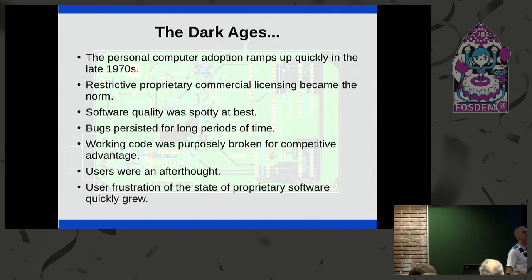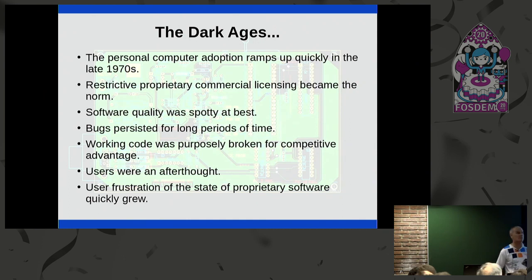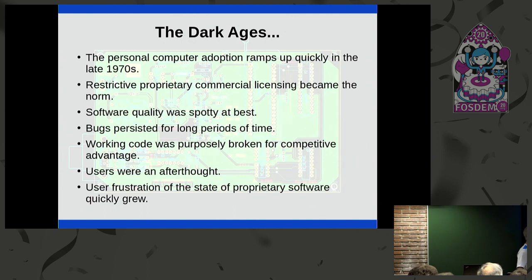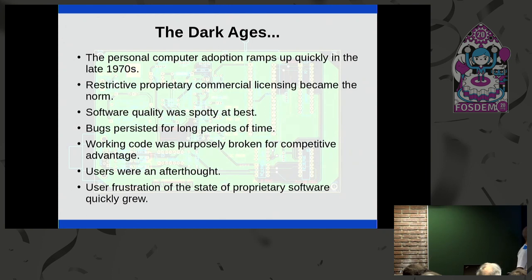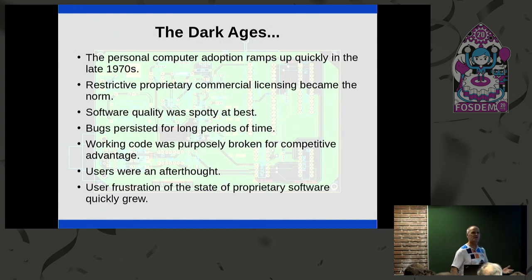They were restrictive proprietary licenses. We've all seen those before — they've been around for decades. Even commercial software quality was not what it is today. Software distribution was by physical media — there was no internet. It was either a floppy disk or something similar. Bugs persisted until you upgraded to the next version, and you had to buy the next version upgrade to get bugs fixed — but then there were always new bugs with new features. Working applications were even purposely broken for competitive advantage. If you were a software user during this time, you kind of felt like you were just an afterthought.